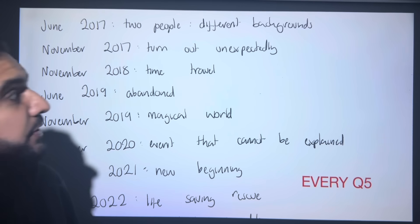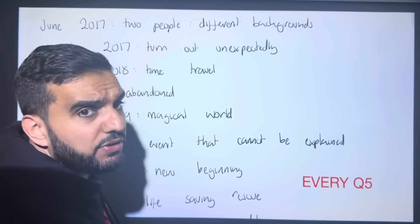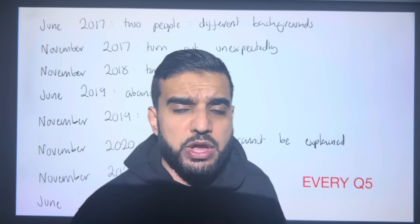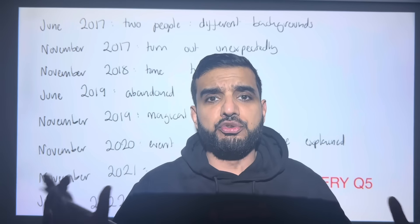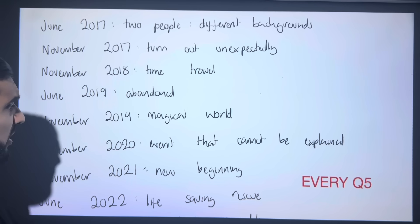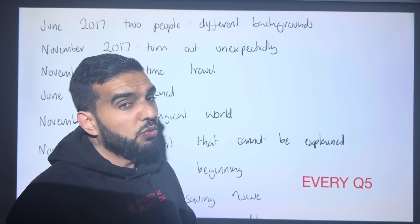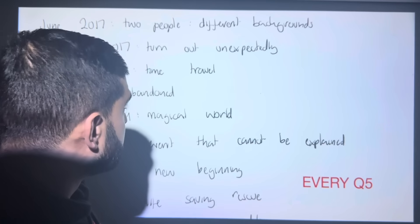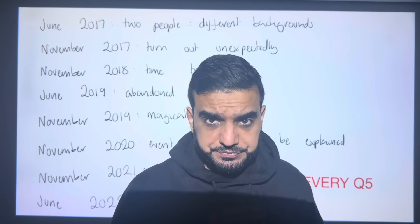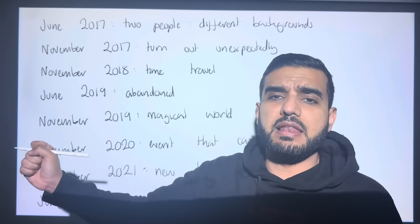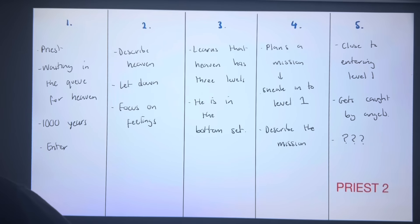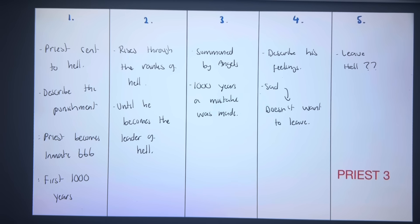How does it end? It's entirely up to you. To apply it to questions: 'Write a story about time travel' — when you enter heaven you've gone down in age to thirty because in heaven you're at your prime. 'An event that cannot be explained' — why did God put you in the bottom level? 'Life-saving rescue' — when the angels catch you, they're going to banish you to hell, but God intervenes and gives you one more chance. Small tweaks make your story fit.